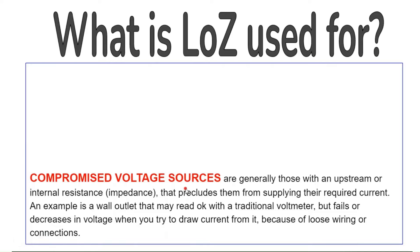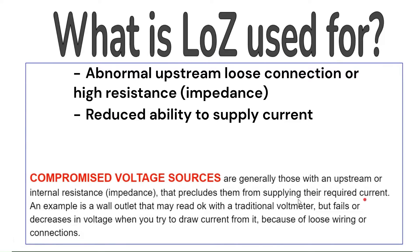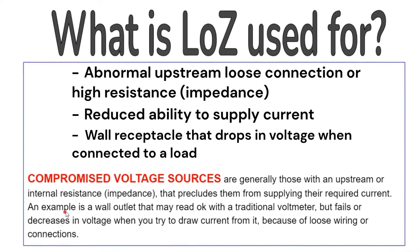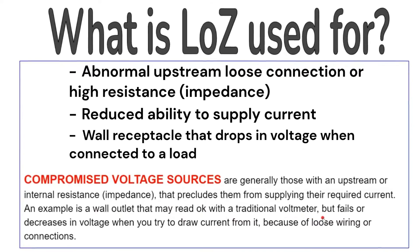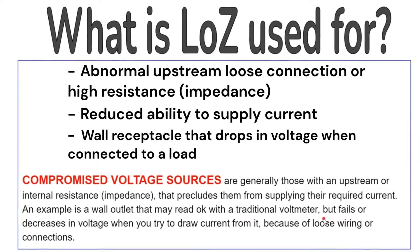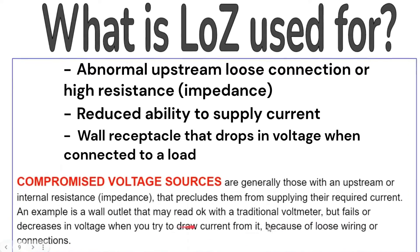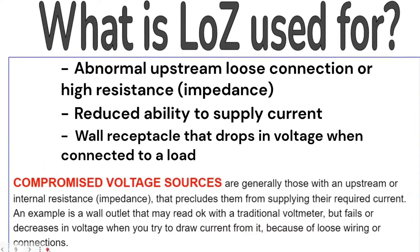Compromised voltage sources, on the other hand, are generally those with an upstream or internal resistance that precludes them from supplying the required current. An example is a wall outlet that may read okay with a traditional voltmeter, but fails or decreases in voltage when you try to draw a current from it, because of loose wiring or connections.